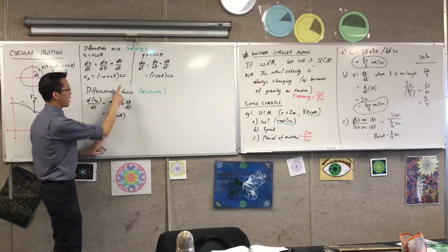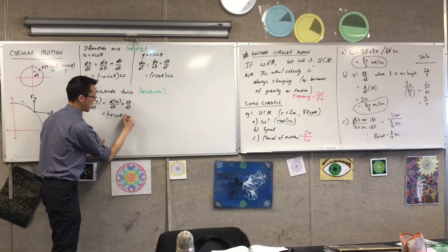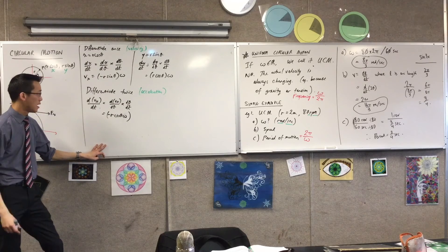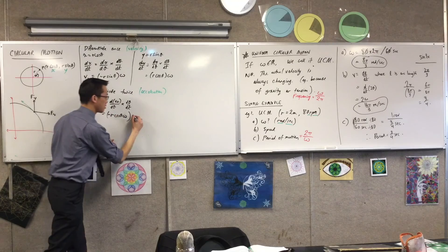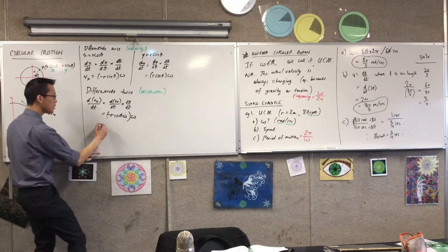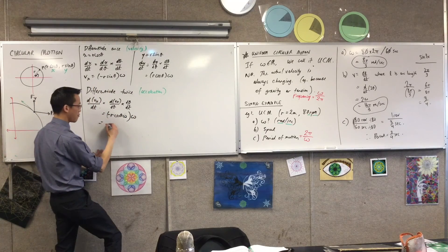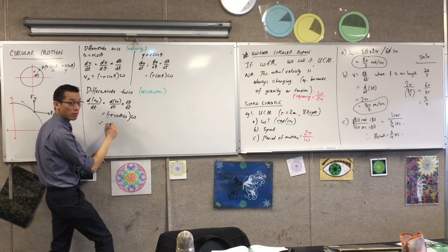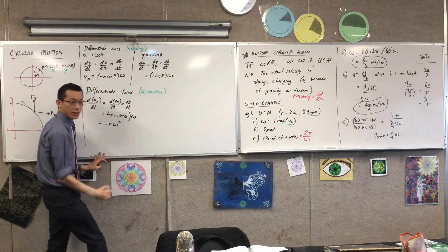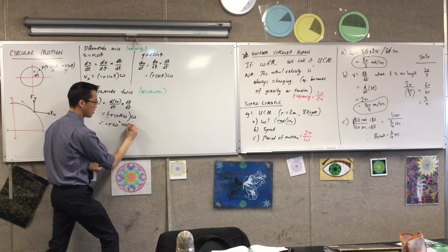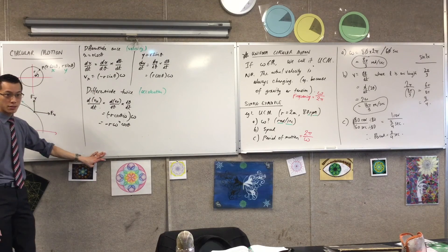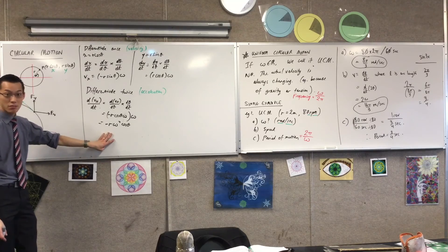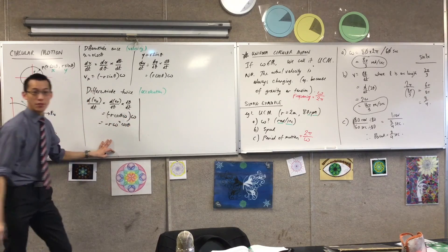So I can write this guy as minus or negative r, there are two omegas, so omega squared, cos theta. Are you happy with that so far? Can you do it again for the vertical component?